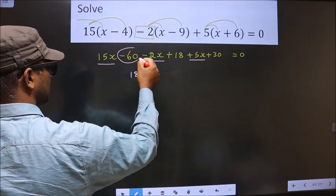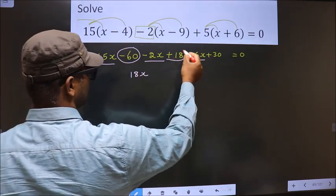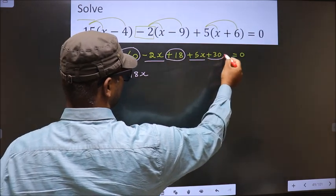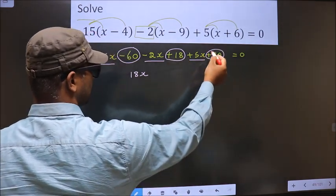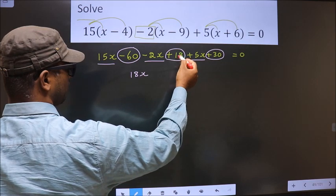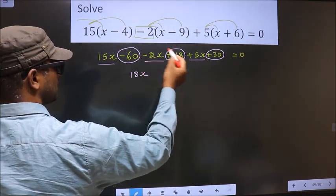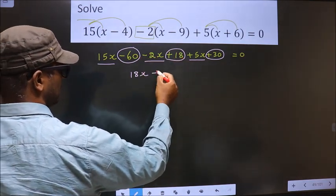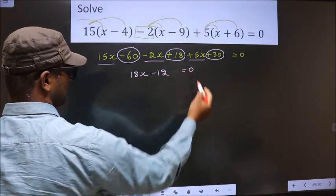Now the constants, that is minus 60 plus 18 plus 30. 30 plus 18 is 48, minus 60 plus 48 is minus 12, equal to 0.